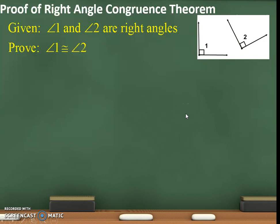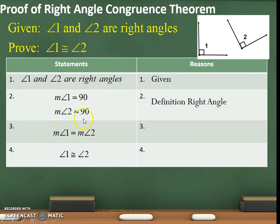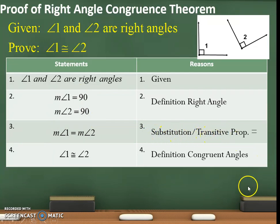They're both 90, so they're congruent — but how do we prove that using statements and reasons? We always start with given: angle 1 and 2 are right angles. Next: angle 1 is 90 and angle 2 is 90 — that is the definition of right angle. Then, angle 1 equals angle 2 because 90 equals 90, so substitution property or transitive property of equality. Finally, angle 1 is congruent to angle 2 — definition of congruent angles.